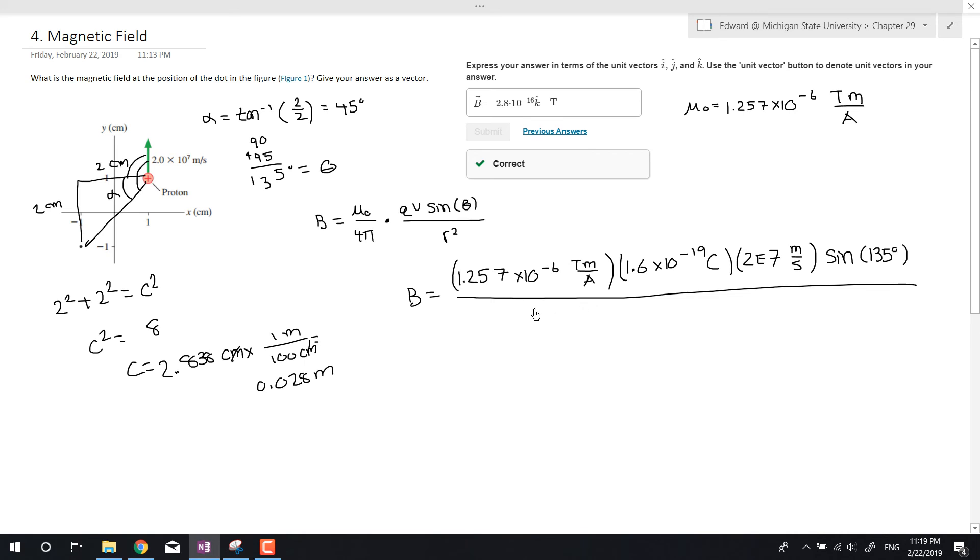And we want to divide it all by 4 pi times r squared. So that's just gonna be 0.028 meter squared. So this meter cancels out with this meter here and this meter right here. And then the coulomb over second, that's an amp. So those cancel perfectly. We're just left with Teslas, which is what the unit of a magnetic field is in.